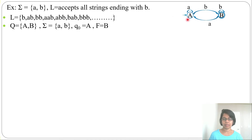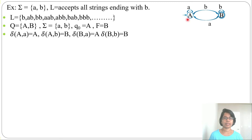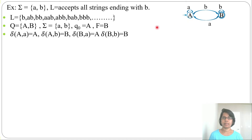Next, we do the delta function or transition function. Delta of state A with symbol a: from state A with symbol a we go to state A, so delta(A, a) = A. Then delta of state A with input b: from A with input b we go to state B, so delta(A, b) = B. Then delta of state B with input a gives A, and delta of state B with input b gives B.